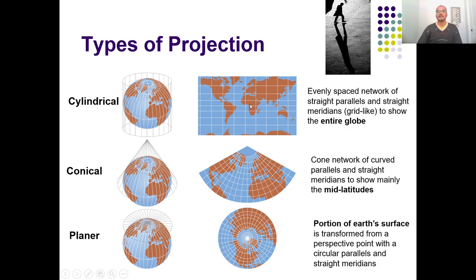Cylindrical projections are normally used to cover the entire globe because the cylinder can comfortably cover the entire globe better than the other two developable surfaces. In cylindrical projections, all latitudes and longitudes are shown as straight parallels and straight meridians, just like a grid. Conical projections are good for half of the globe — either the northern or southern hemisphere — especially the mid-latitude regions. Here the network consists of curved parallels and straight meridians. The planar surface is good for a particular point of interest, especially the poleward regions, where meridians are straight lines and parallels are circular.